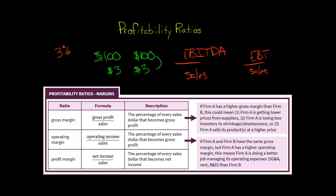The profit margin tells us a couple of things. Number one, it tells us about the company's ability to manage its expenses. In general, margins tell us about the ability to manage the company's expenses and also about the company's pricing strategy.